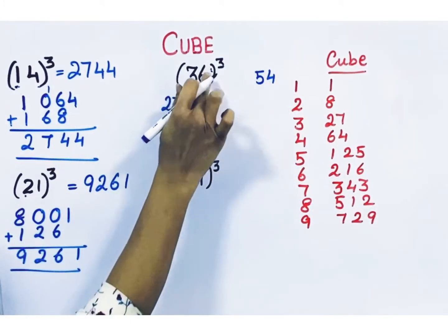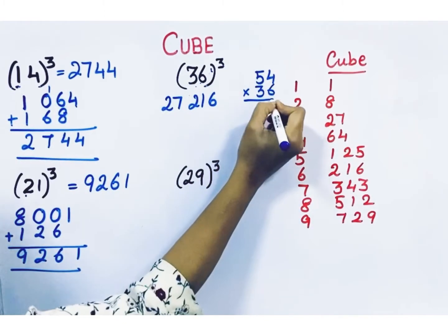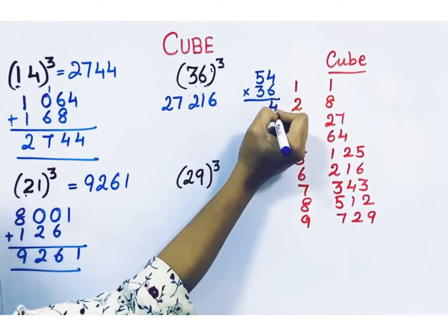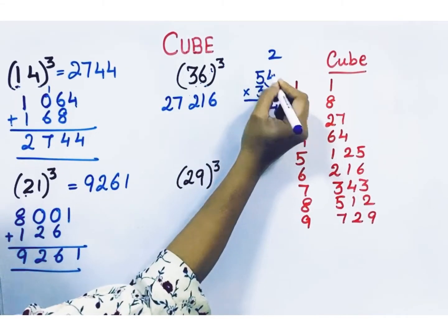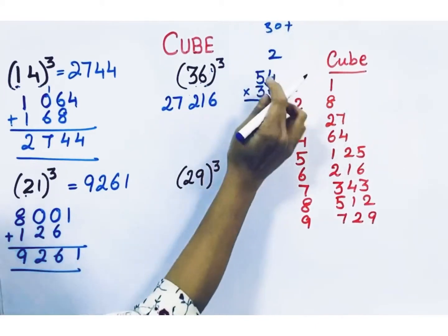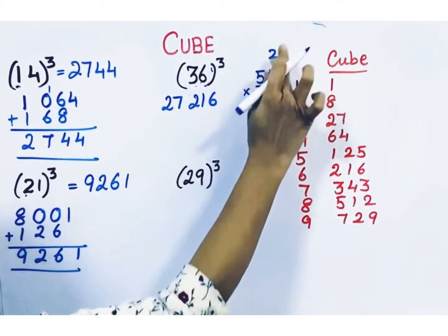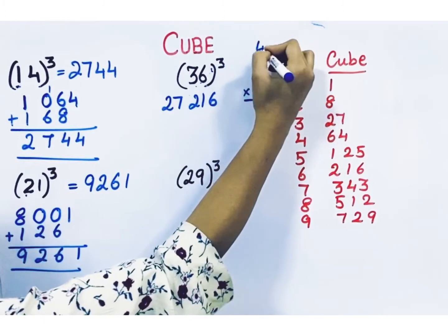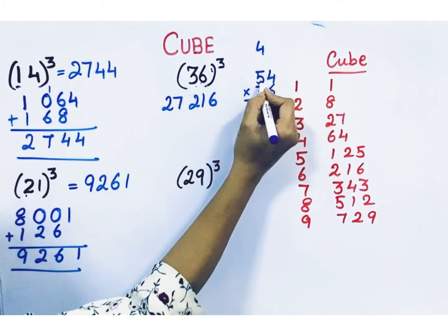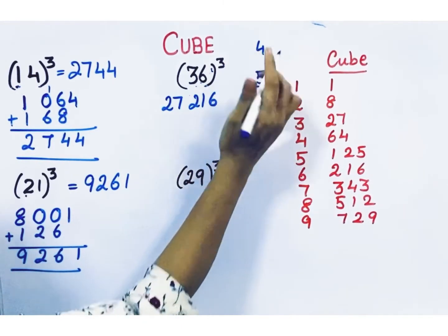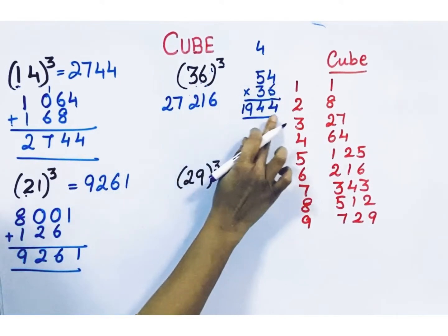Next step: take 54 and multiply by 36. First, vertical: 4 times 6 is 24, carry 2. Then crosswise: 5 times 6 is 30, plus 4 times 3 is 12 — addition gives 42, plus carry 2 is 44. Write 4 here and carry 4. Next, vertical: 5 times 3 is 15, plus 4 carry is 19. Multiplication answer is 1296.